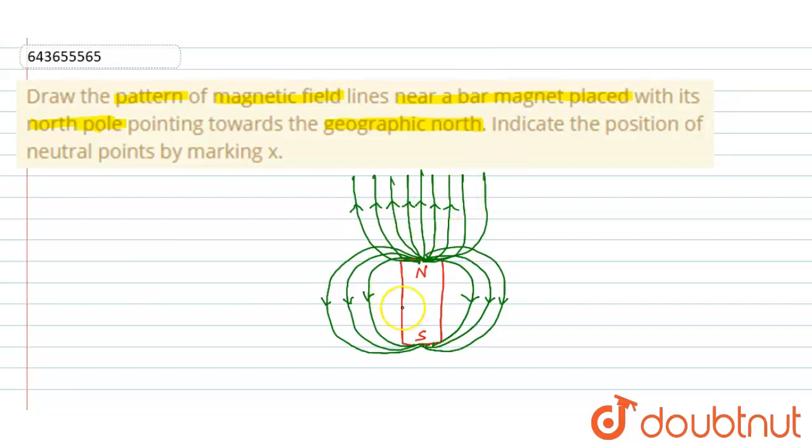Okay, so when we talk about the south pole, the magnetic field lines are like this.